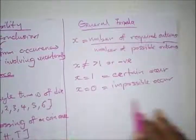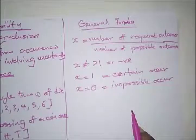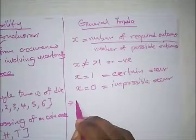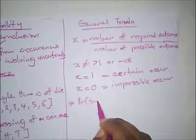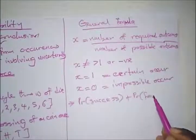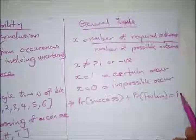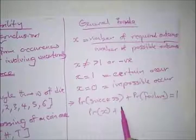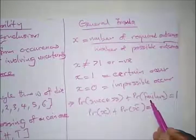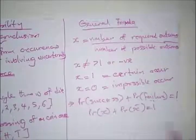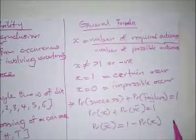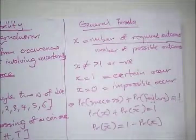For any event, the probability of success plus failure equals one. That is, P(x) plus P(x̄) is equal to one. Also, the probability of failure — that is, nothing happening — can be found by rearranging: probability of failure equals one minus the probability of success.